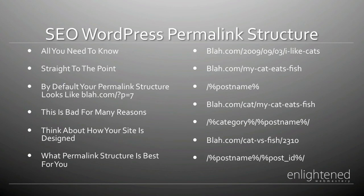Whenever you first set up your WordPress blog, you're going to be presented with something like yourdomain.com/?p=7. That is what your posts look like — make another post and it becomes p=8, and so on. You do not want this as your default permalink structure because this is not SEO friendly. People don't know what you're trying to tell them when they click the link — it could be anything.